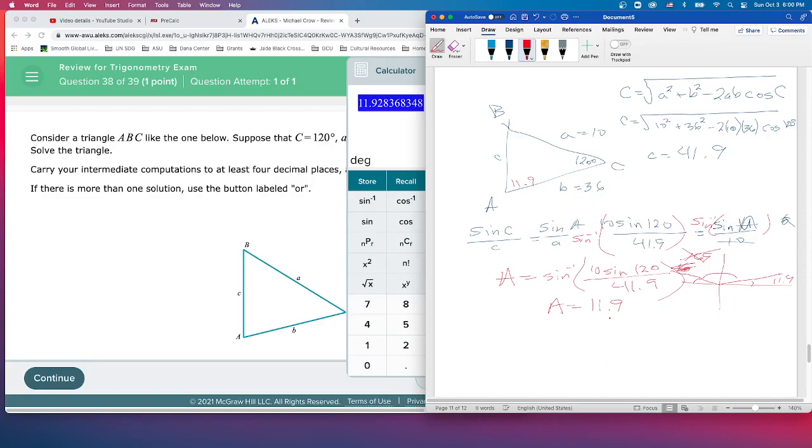But what we do need is we need angle B. That's really all we need. So far we've got big A, but what we've done is because angle C is so huge, that's all we can do. So angle B we can find now. We've got 120 plus 11...